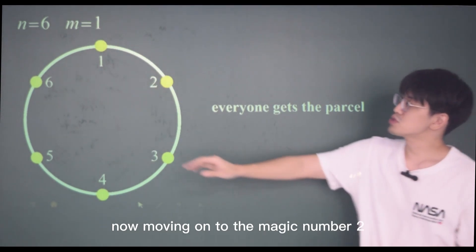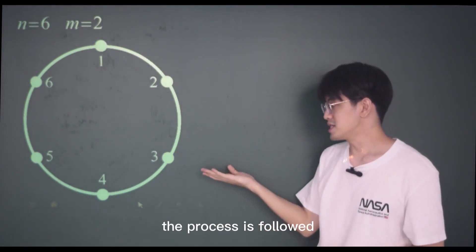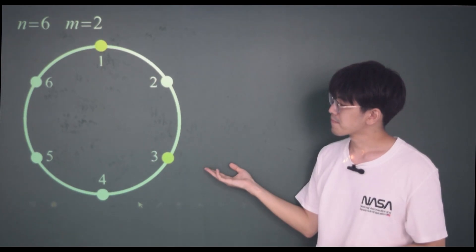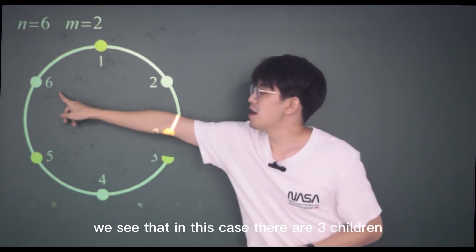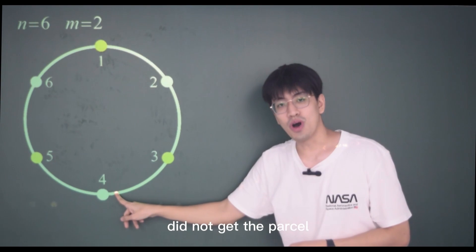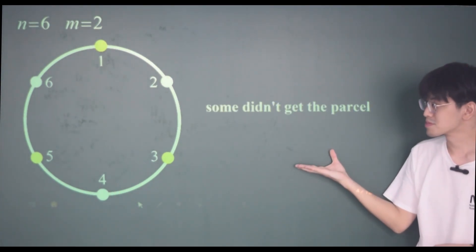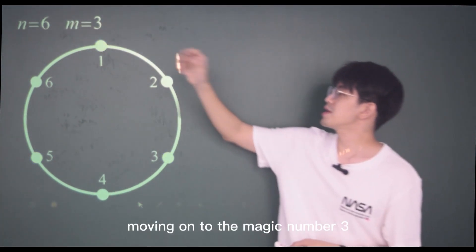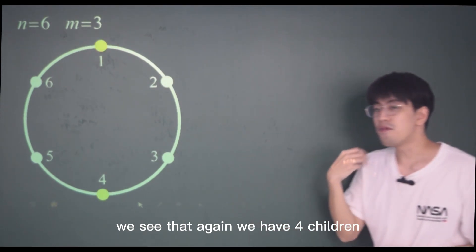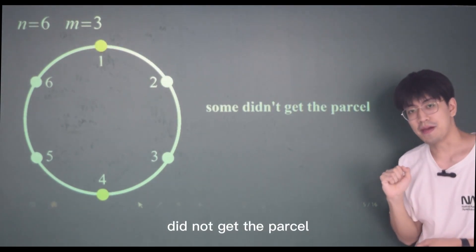Moving on to the magic number two, the process is as follows. We see that in this case, there are three children who did not get the parcel. Moving on to the magic number three, we see that again, we have four children who did not get the parcel.